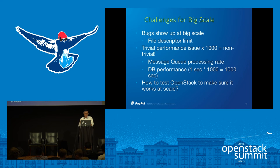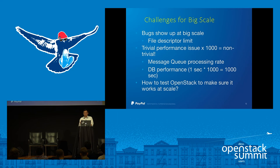For example, the message queue processing rate, as we saw, is one example — because when you multiply by 2,400, the message processing rate immediately becomes an issue. Another example: when you configure the DB to be more reliable by tuning it, you change how fast the DB can write. Again, a trivial issue becomes non-trivial when multiplied by 1,000.